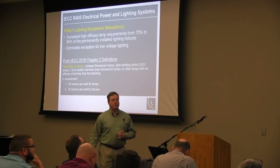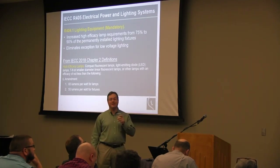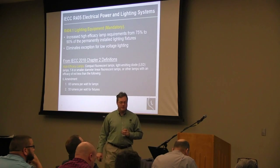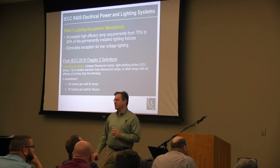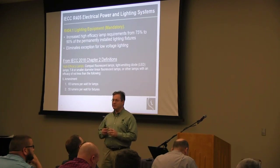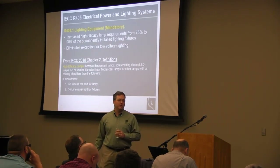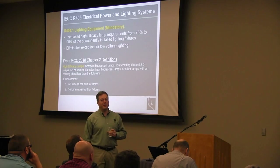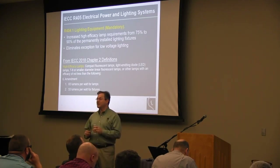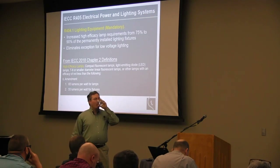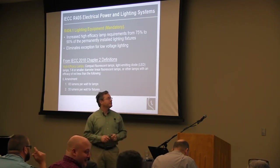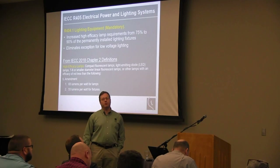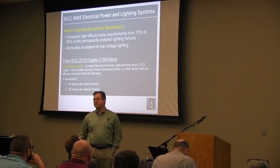For lighting equipment, the requirement has increased from 75% up to 90% of all permanently installed fixtures that must have high-efficacy lamps. The major change in 2018 is that the low-voltage lighting exception was removed — previously people could install as many MR-16 low-voltage fixtures as they wanted because they didn't count toward the requirement. Now everything counts. The remaining 10% still provides some flexibility.